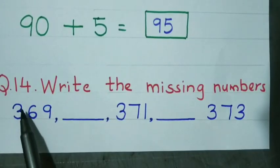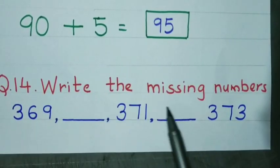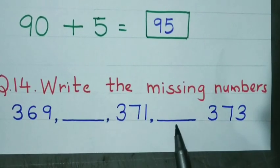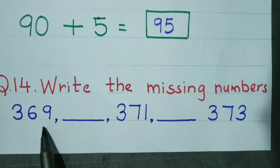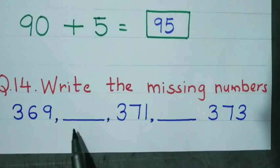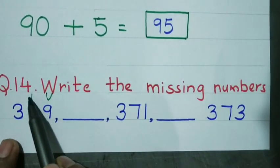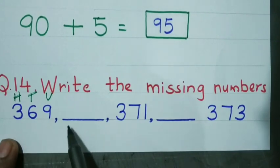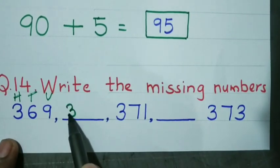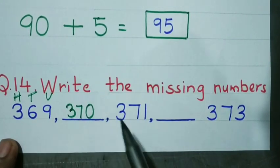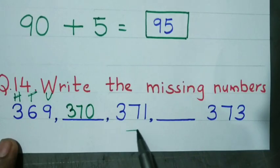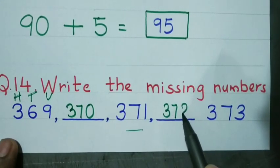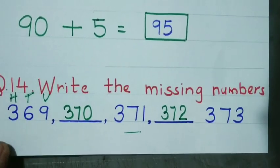Question number 14: Write the missing numbers. Read the numbers carefully. The sequence is: 369, blank, 371, 372, 373. The missing number is 370.